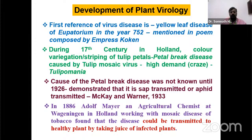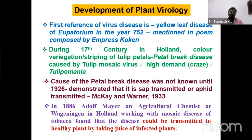Before going into detailed study, we need to study the history of viruses, as it teaches many things regarding the architecture, composition, classification, and replication of plant viruses. The first reference to a virus disease is yellow leaf disease of Eupatorium in the year 752, mentioned in a poem composed by the Empress. During the 17th century in Holland, color variation or striping of tulip petals — petal break disease — was caused by tulip mosaic virus.